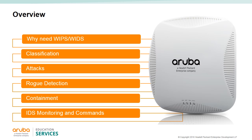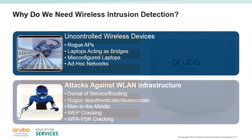In any network, intrusion detection is of paramount necessity because attacks can originate from outside or even inside the network. The most important IDS functions offered in the Aruba Instant network are the ability to detect rogue APs, interfering APs, and other devices that can potentially disrupt network operation. Instant can even warn you of various forms of attack against the network.